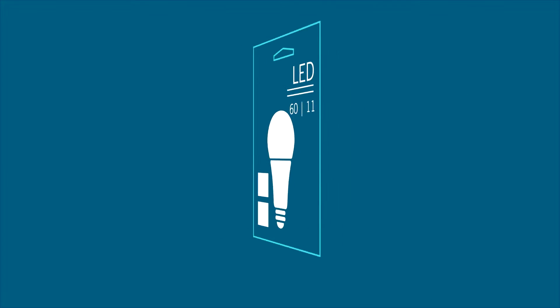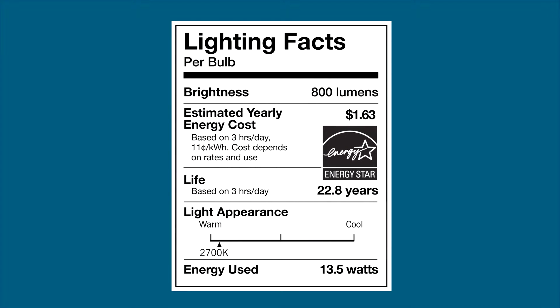Just like a nutrition label, the lighting facts label gives you info to make quick and easy informed lighting decisions. Here you'll be able to check a bulb's brightness, energy cost, life, light appearance, and wattage.